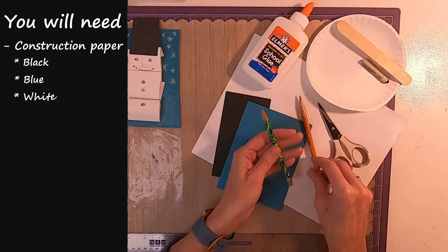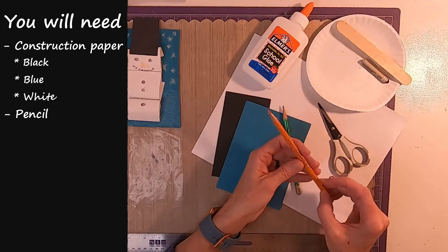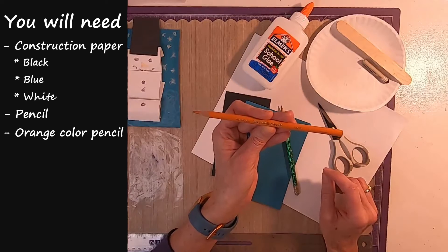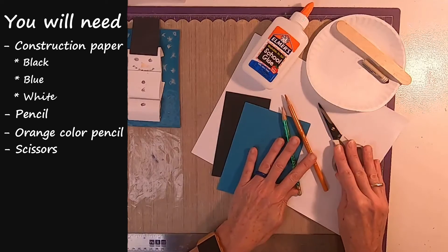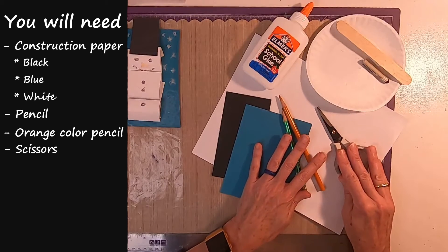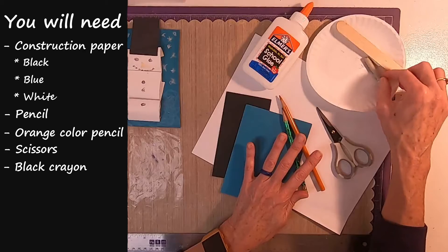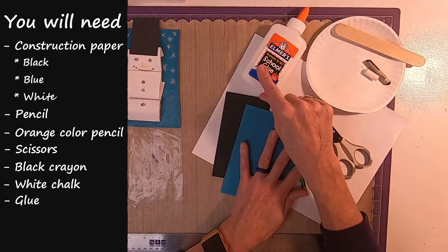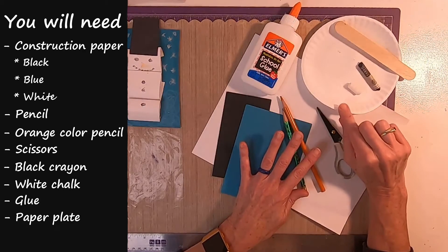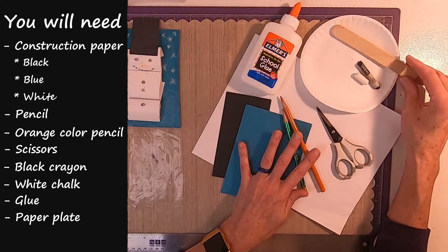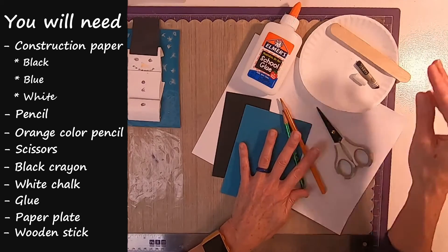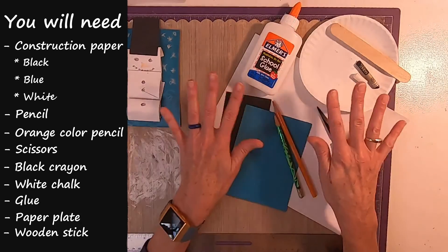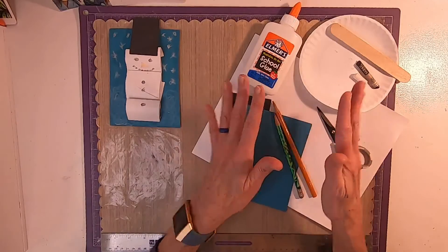We'll need a pencil, an orange color pencil, a pair of scissors, black crayon, white chalk, liquid glue, a small paper plate, and a wooden stick. Okay, go gather your things, and let's get started.